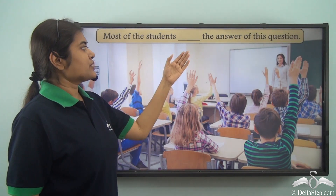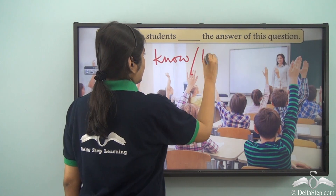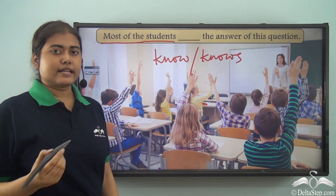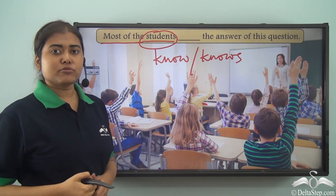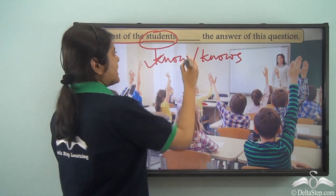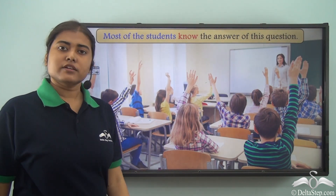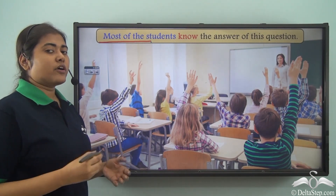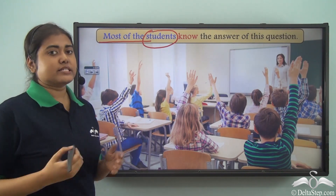'Most of the students ___ the answer of this question' — will it be 'know' or 'knows'? The entire phrase 'most of the students' is the subject. After 'most of the,' the noun is 'students,' which is a countable noun, so the verb must be plural. The plural form of 'know' is 'know,' so the answer is 'Most of the students know the answer.' Whenever you have phrases like 'most of the,' 'some of the,' 'lots of,' 'all the,' 'none of the,' look at the noun to determine whether the verb should be singular or plural.